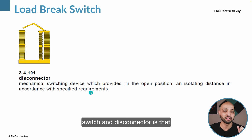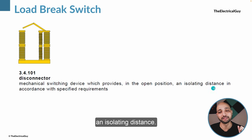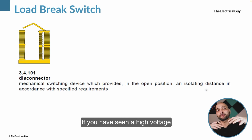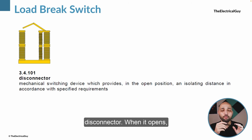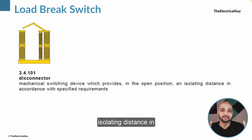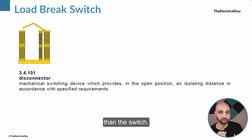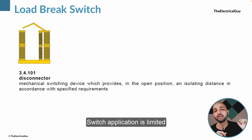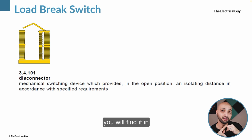The difference between switch and disconnector is that the disconnector also provides an isolating distance. If you have seen a high voltage disconnector, when it opens you will see it maintains a very large distance between the two live contacts, providing a significant isolating distance in the switchyard. Switch application is limited to low voltage and medium voltage, but disconnectors you will find at medium voltage, high voltage, and extra high voltage as well.